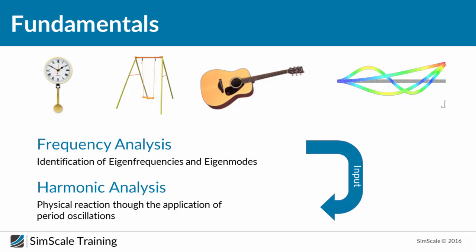Based on this we can do something called harmonic analysis, which is somehow the opposite of frequency analysis. It gives you back the physical reactions through the application of periodic oscillations. Combining these two simulations can help us to massively improve our products and also improve 3D printers. The frequency analysis gives us eigenfrequencies which will be self-amplified, and we can then do a harmonic analysis investigating the physical reaction of our design through the application of a periodic oscillation at those same frequencies.